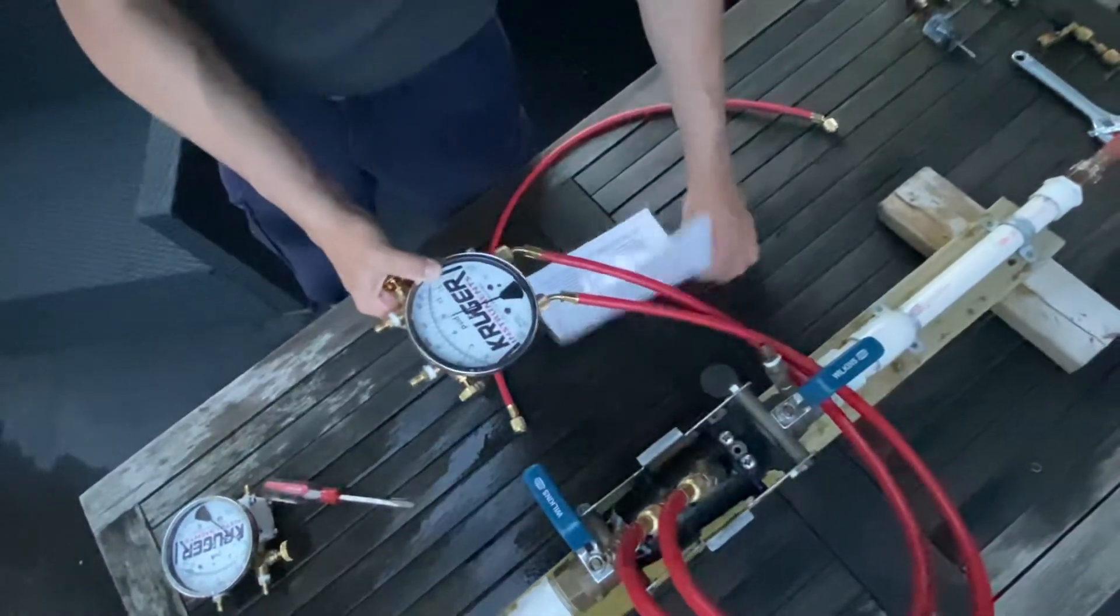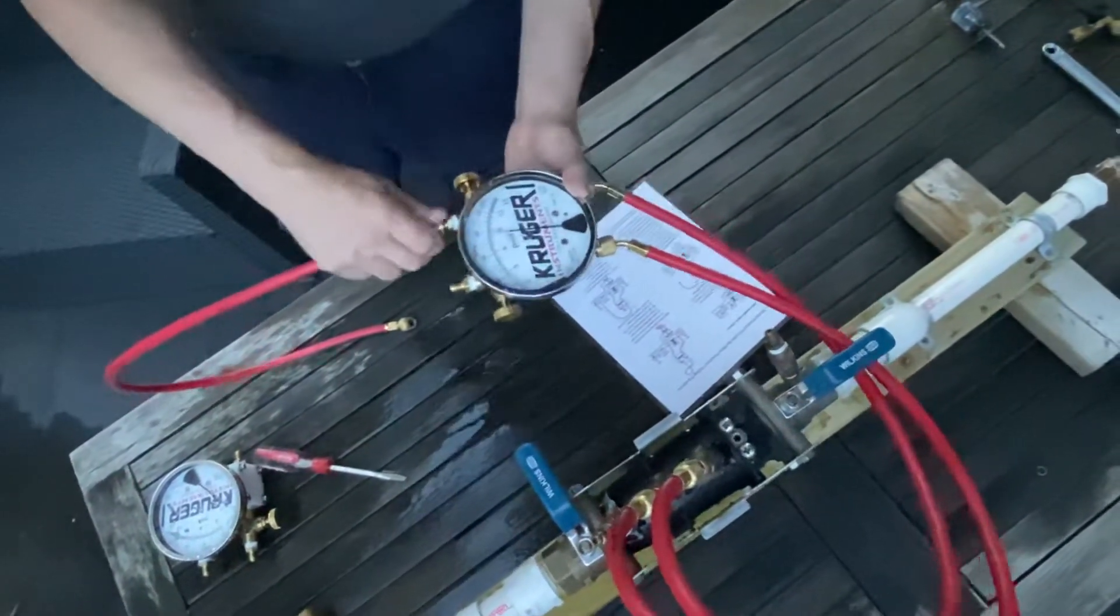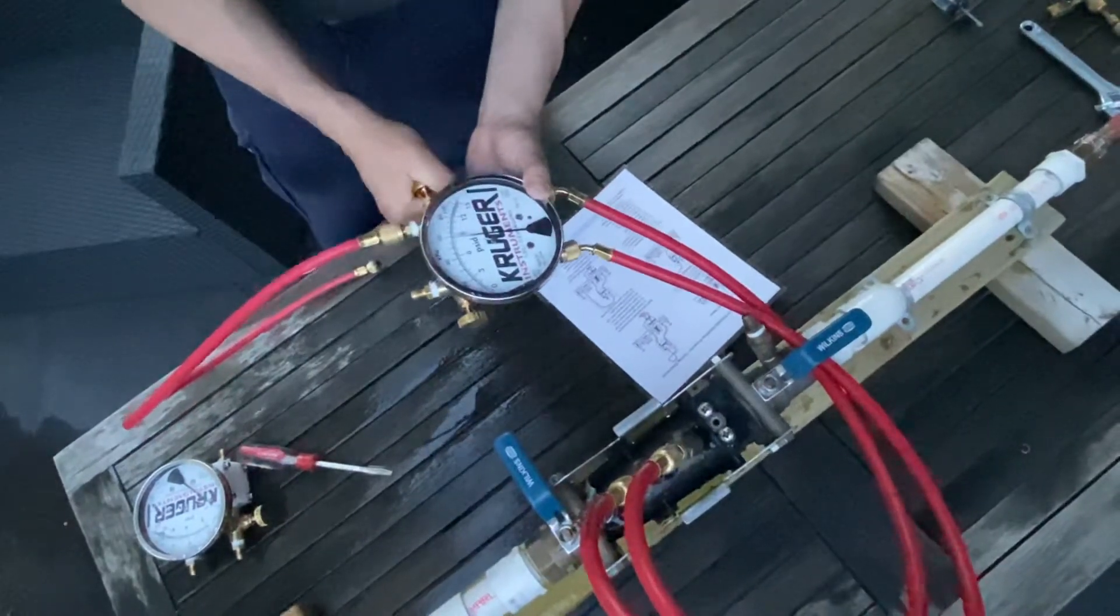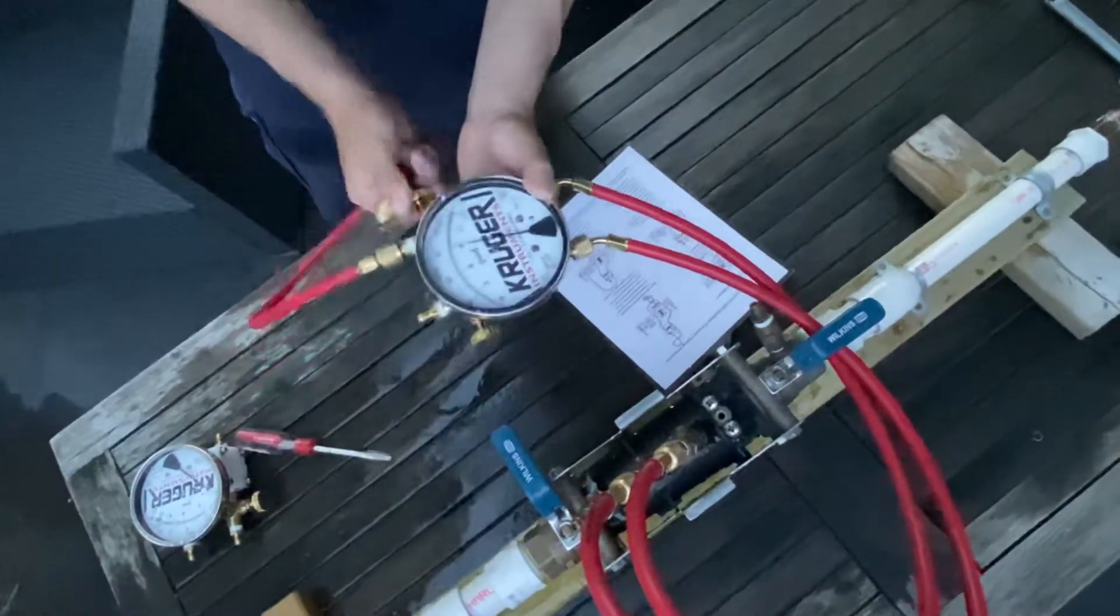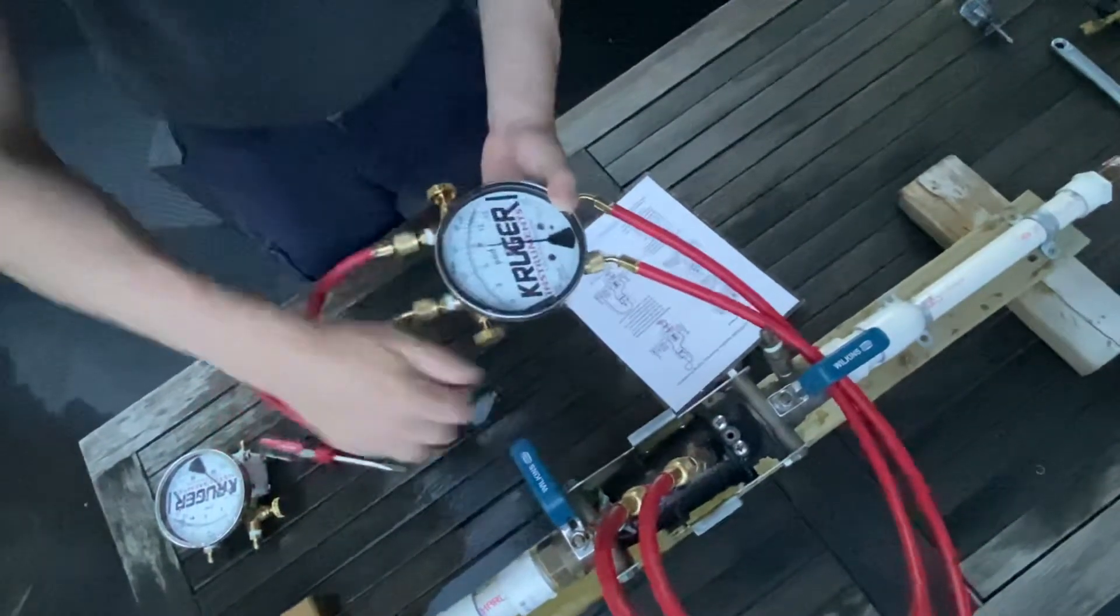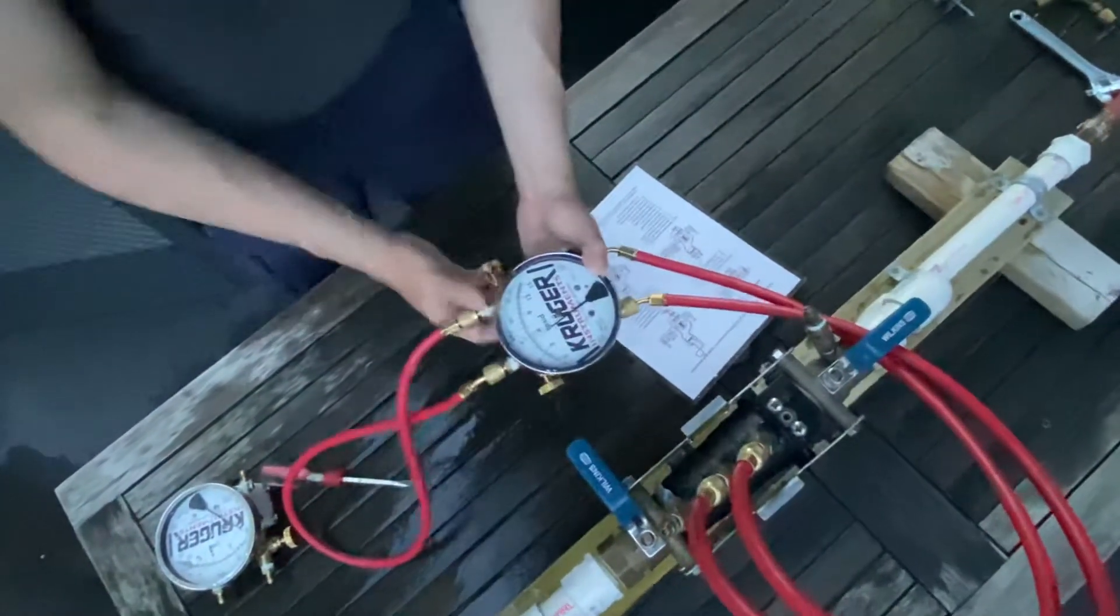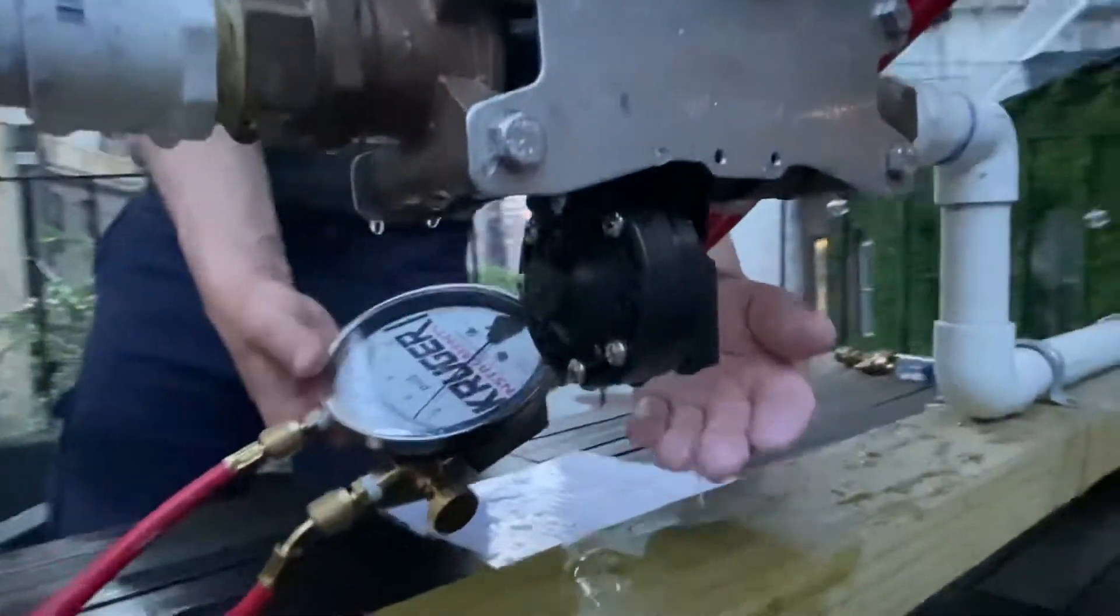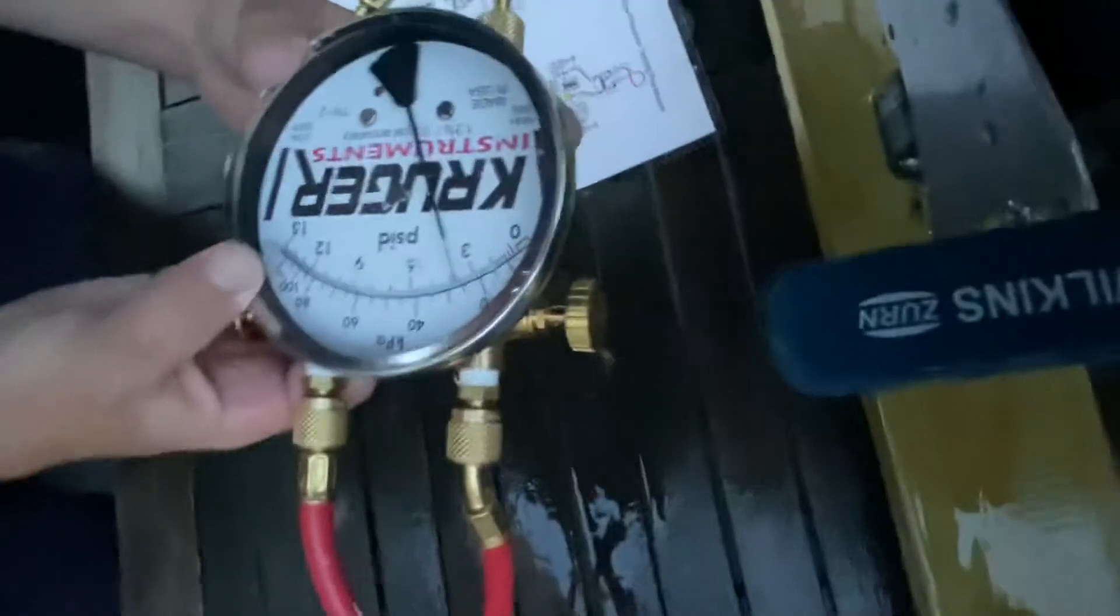So the first test is the relief valve opening point. You attach another hose to the low side of the kit, open low bleed, you bleed the water through, close low bleed. Attach the other side of the hose to the high side of the kit. Open high valve one full turn, open low valve a quarter turn. You'll see the pressure going down. Then you put your hand under the vent and when you feel water coming out, that's your relief valve opening point. So 3.6, has to be at least two.